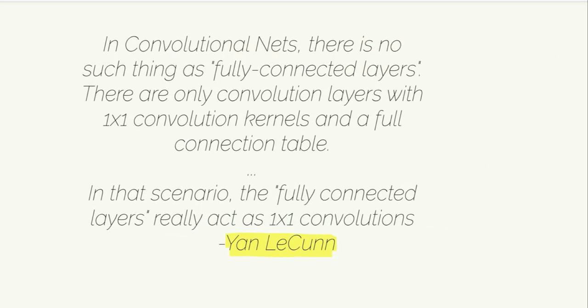Just a word of thought: one of the heroes of deep learning and pioneer of convolutional networks, Yan LeCun, once stated that in convolutional neural nets there's no such thing as fully connected layers. There are only convolutional layers with one by one convolutional kernels and fully connection tables. So if you take fully connected layers, they are basically a product of matrix multiplications, and you can easily replace them as one by one convolutions as we just saw. So as he states, in that scenario the fully connected layers really act as one by one convolutions.